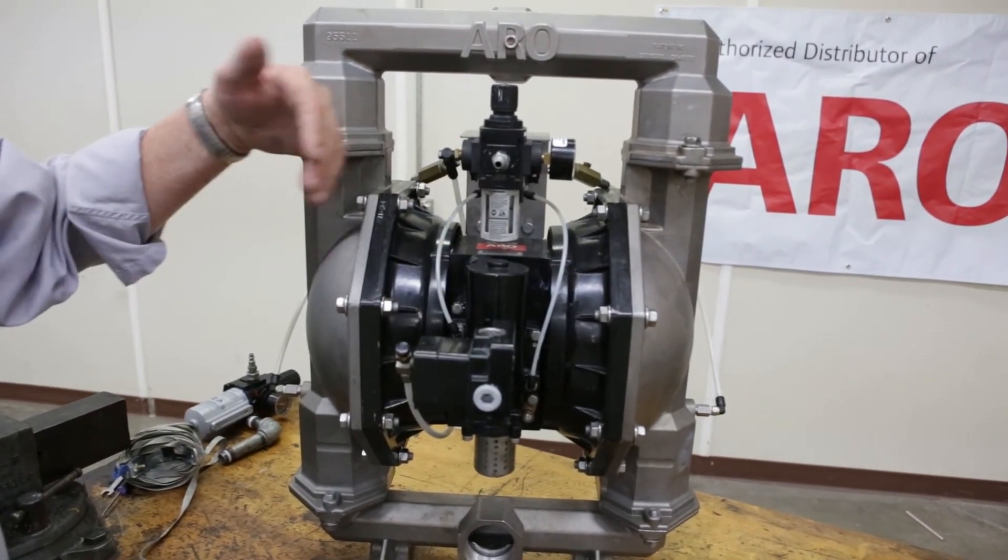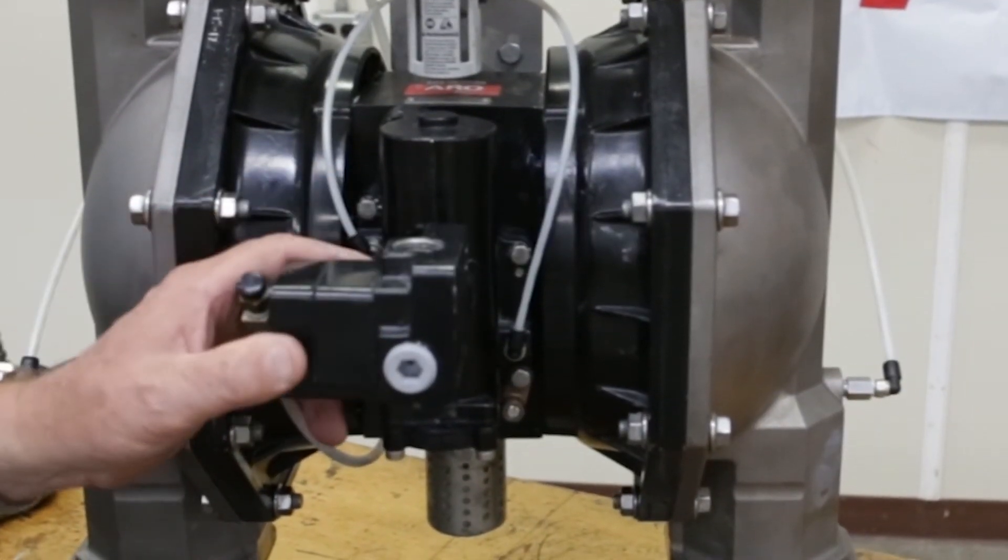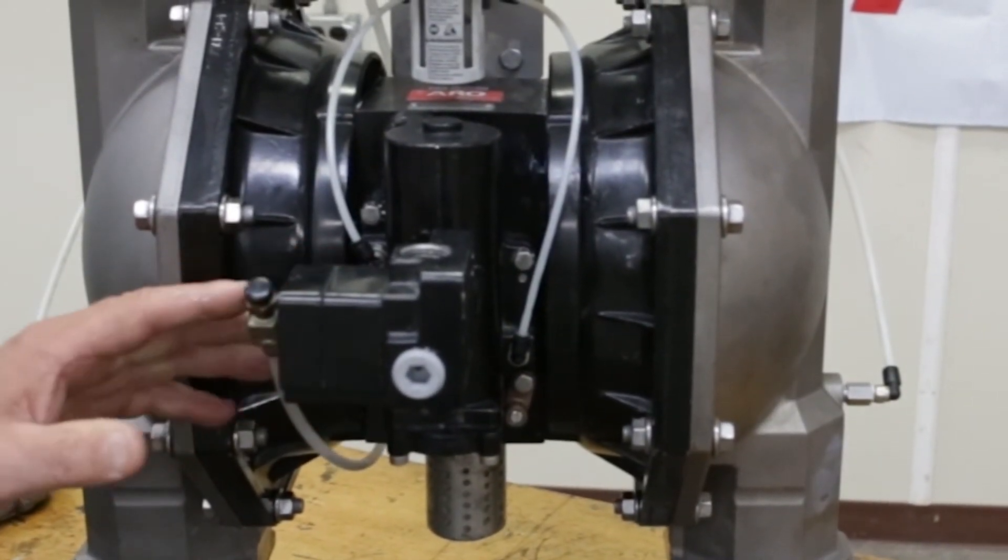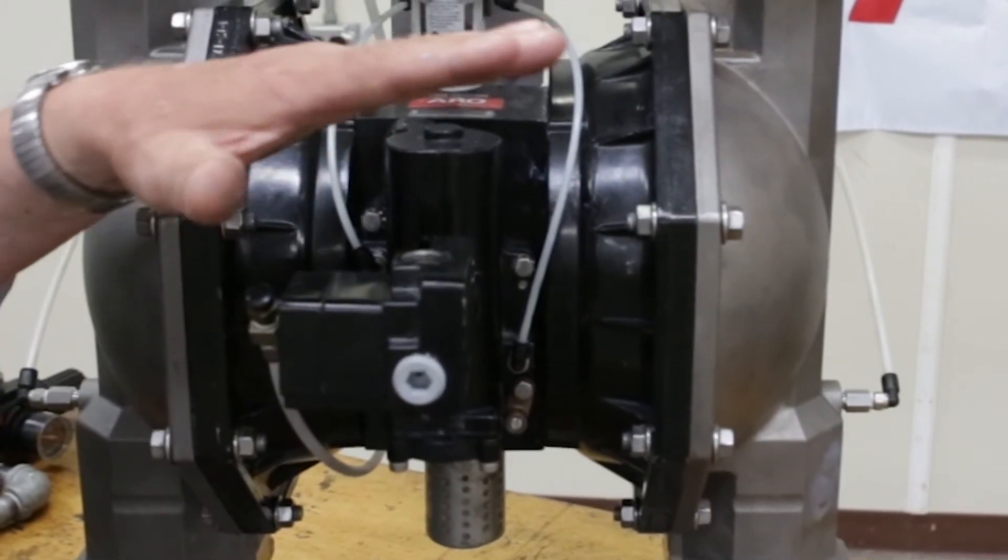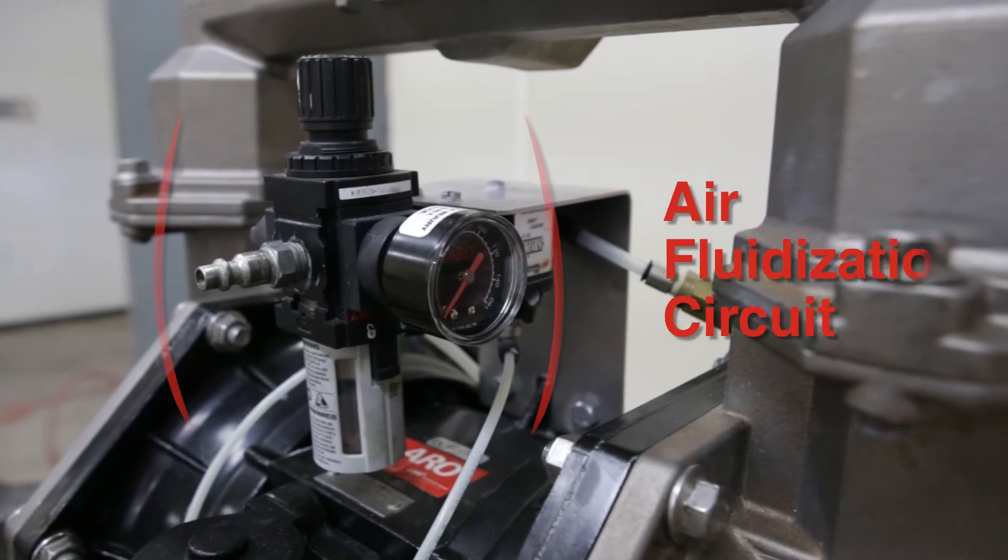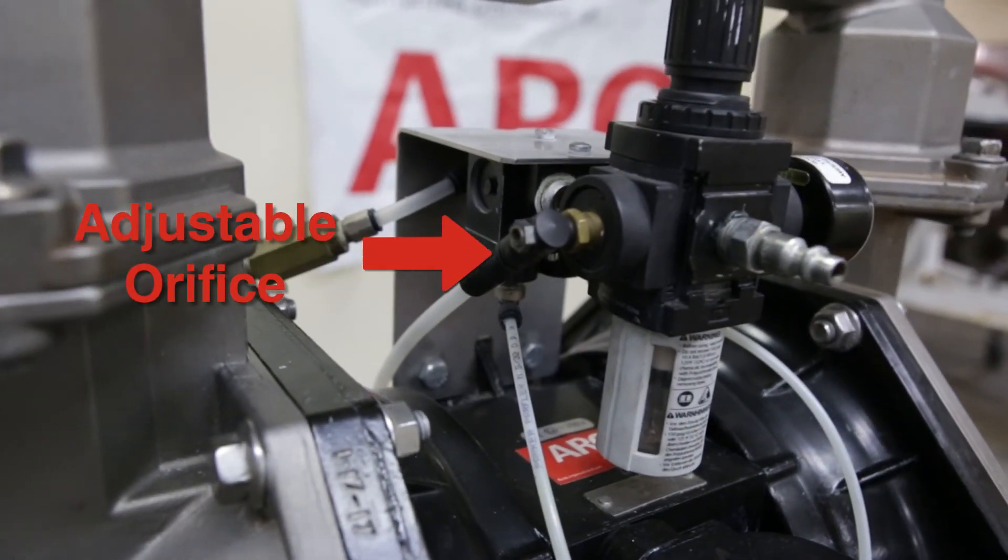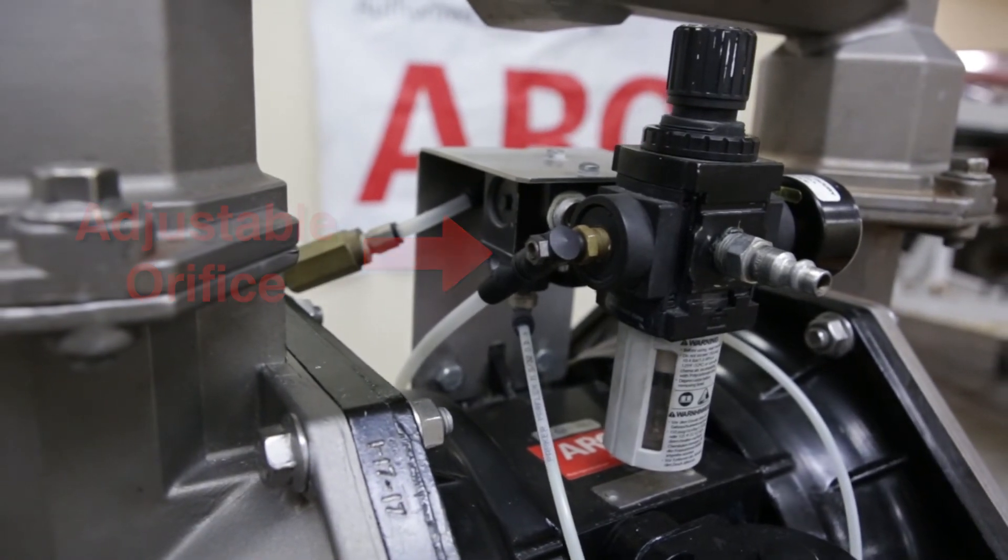We've added some additional components to the pump to make this work. On the front of the pump is the main air supply. This is an ARO H-series valve, which powers the diaphragms and allows them to reciprocate. The second component is the air fluidization circuit. This is made up of a mini regulator and has an adjustable orifice and an alpha four-way valve on the backside.